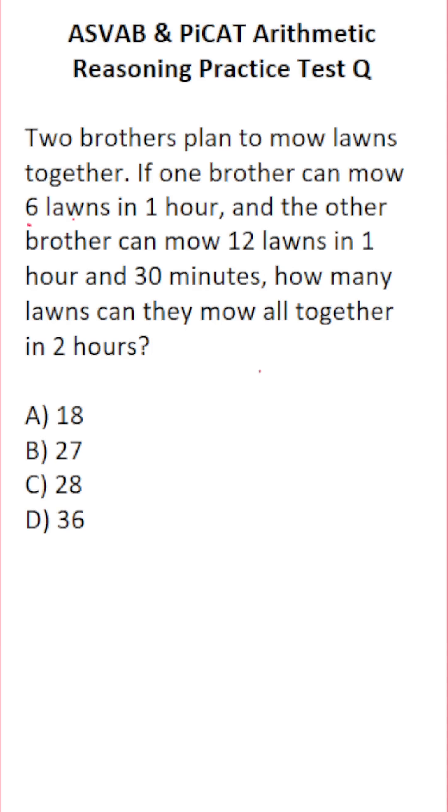So let's start with the easier part. According to the problem, one brother can mow six lawns in one hour. If we want to figure out how many lawns he can mow in two hours, we're going to multiply this by two. So in other words, he can mow 12 lawns in two hours.